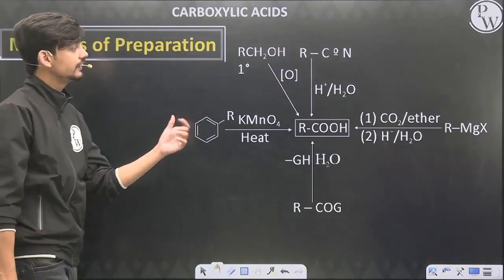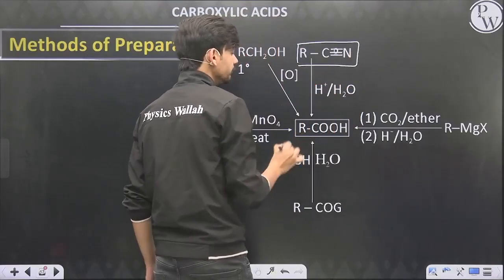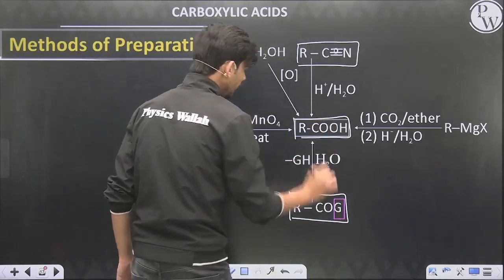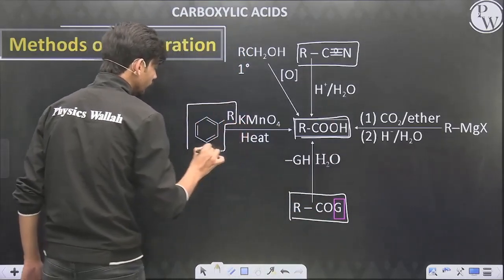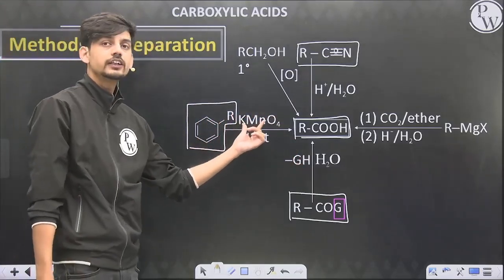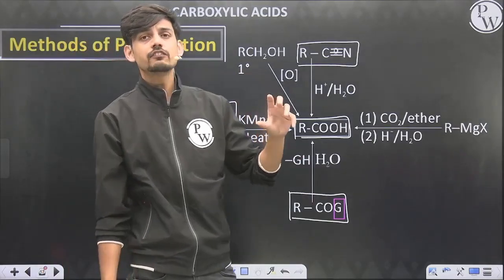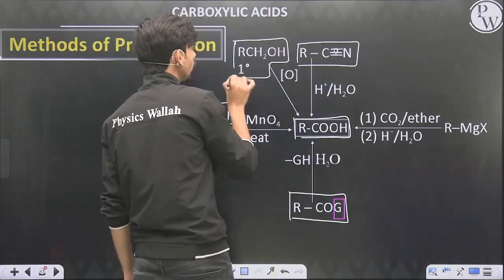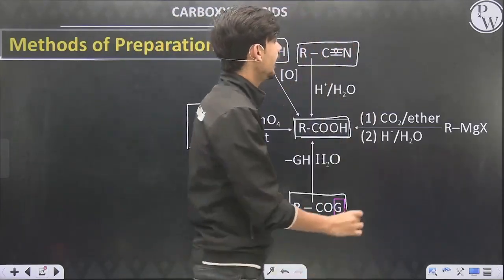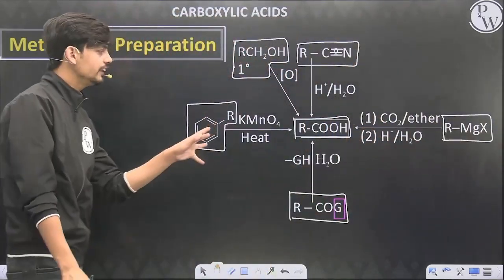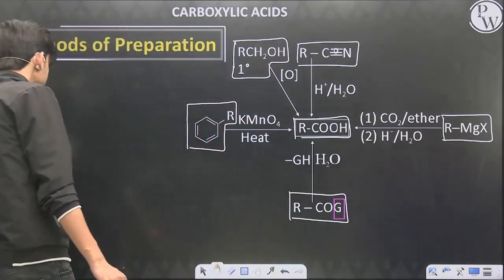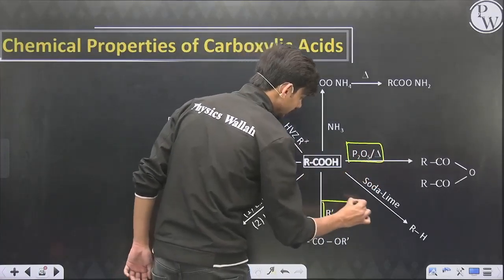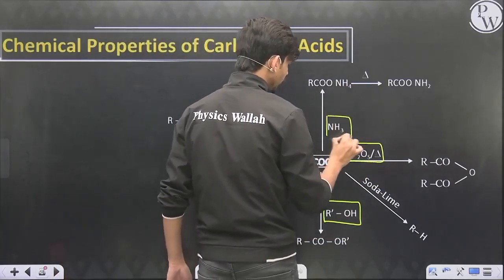Now let's move to carboxylic acids. Carboxylic acid can be prepared by: hydrolysis of cyanide; hydrolysis of any acid derivative where the G group is replaced by –OH; oxidation of alkyl benzene to give benzoic acid — here we use a strong reagent like KMnO4, and irrespective of chain length (methyl, ethyl, propyl), all alkyl chains give only a carboxyl group; oxidation of primary alcohol using a strong oxidizing agent (KMnO4 or K2Cr2O7); and Grignard reagent reacted with CO2 to give carboxylic acid.